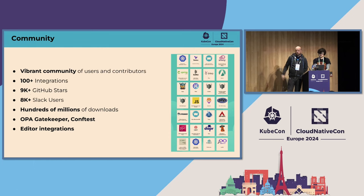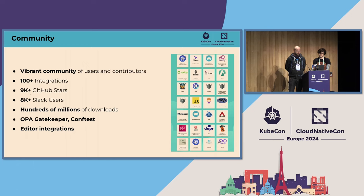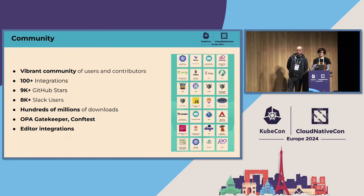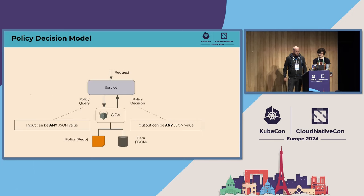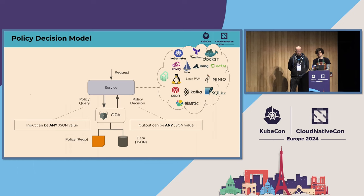We have a vibrant community of users and contributors. There are over a hundred integrations listed on the OPA ecosystem page, so pretty much any technology you choose to work with, you can probably integrate OPA in some shape or form. We have 9,000 GitHub stars, 8,000 Slack users, and hundreds of millions of downloads. There are also projects that spun out of OPA such as OPA Gatekeeper, Conftest, and others. There are integrations for pretty much any editor out there.